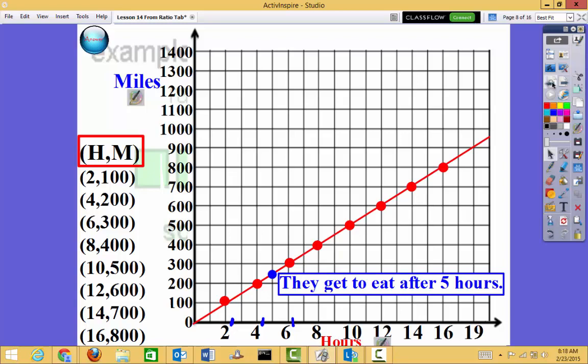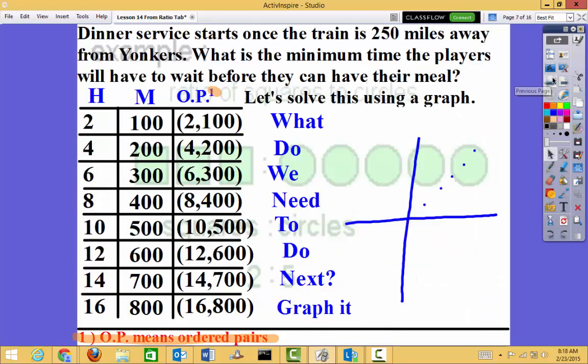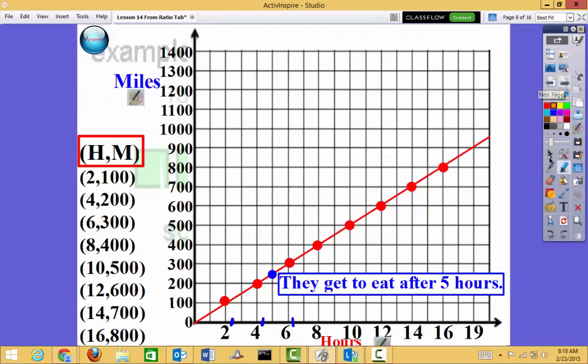My original question is also asking me for what? How long will I have to wait before they can have their meal? Well, they have to travel 250 miles before they get their meal. So where is that? That 250, that's in between 200 and 300. So I look and I see it's right on that 5-hour line right here.